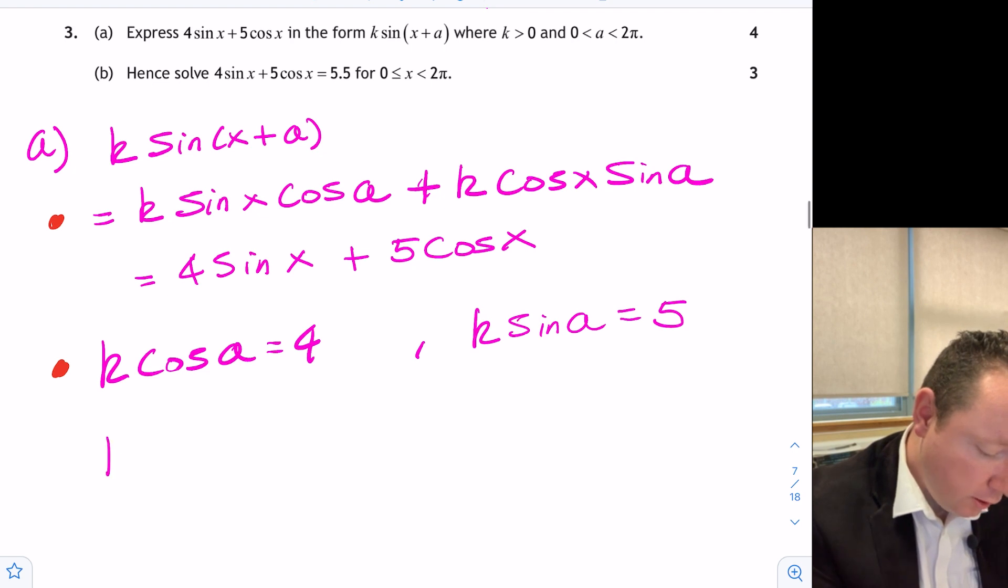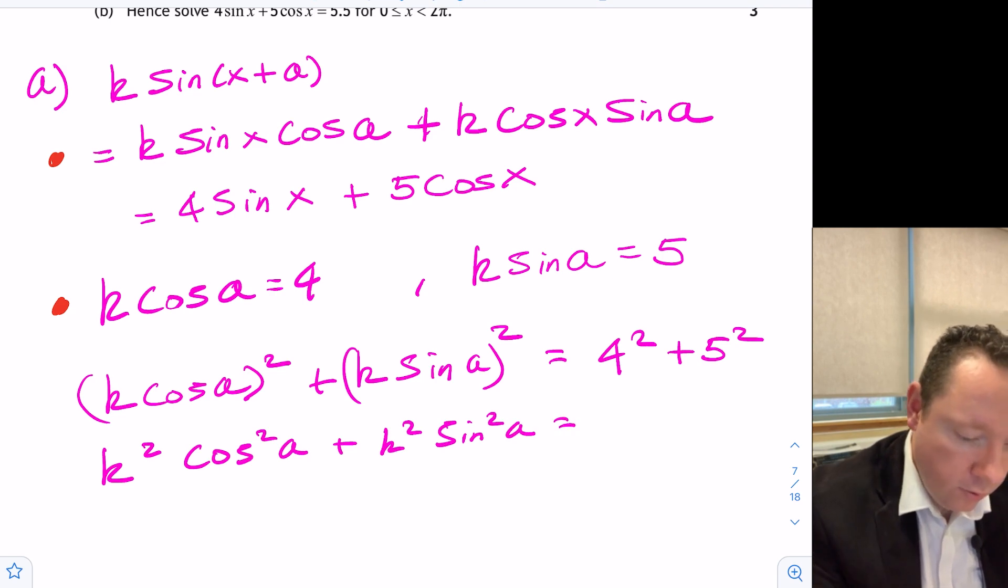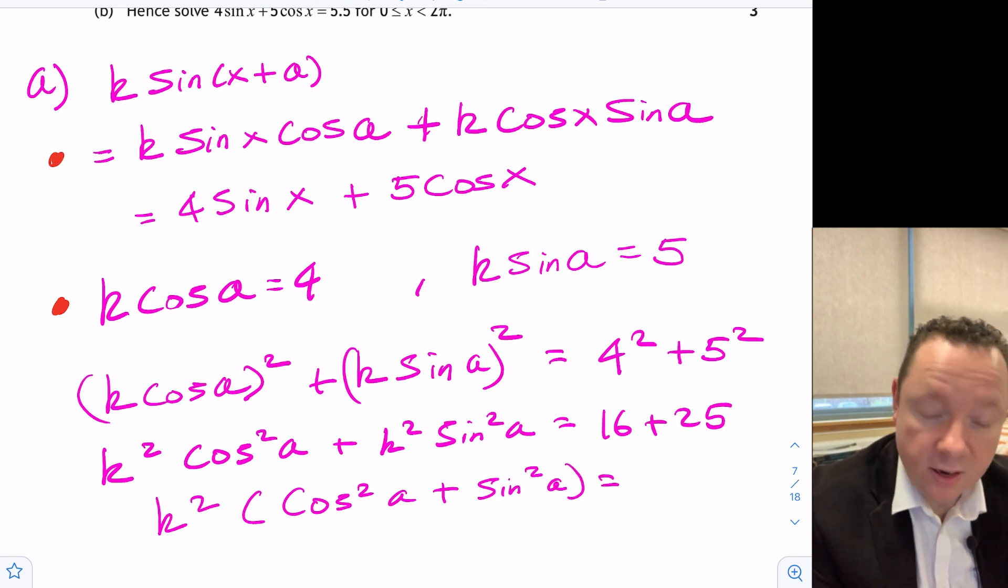So if I do k cos a squared plus k sin a squared, that's going to equal 4 squared plus 5 squared. So that gives us k squared cos squared a plus k squared sin squared a, which equals 16 plus 25. So that's k squared times cos squared a plus sin squared a is equal to 25 plus 16 is 41.